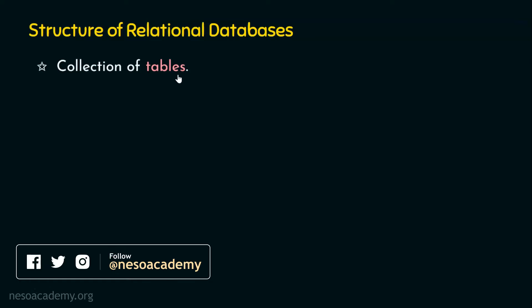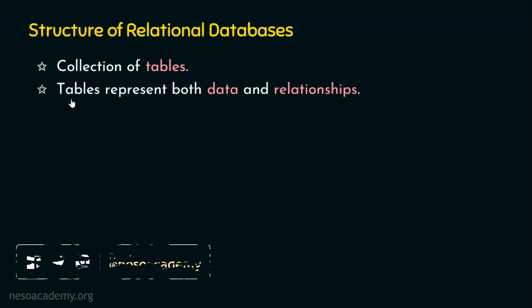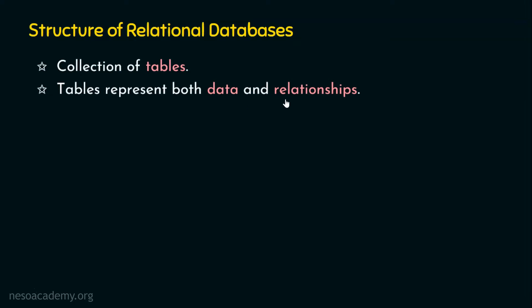Are tables going to store only data? No. Tables represent both data and the relationship. Suppose if you have a table with four attributes, we store all the data in the tables, and this table is actually described by rows and columns.